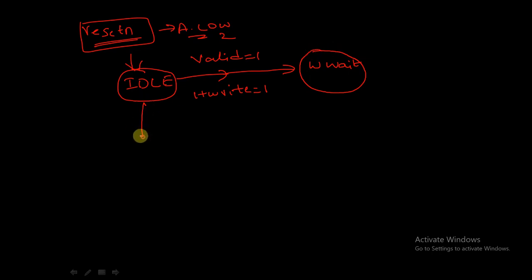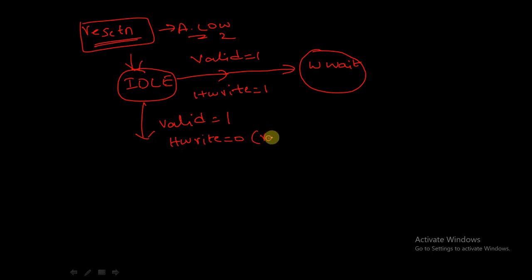If VALID is equal to one and HWRITE is equal to zero, that is a read operation, then the state will be the READ state. Now let's see about the WWRITE state and READ state.